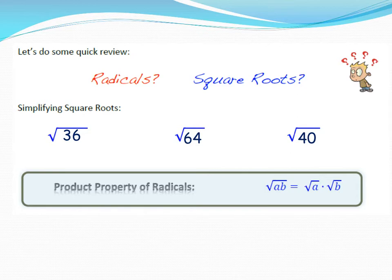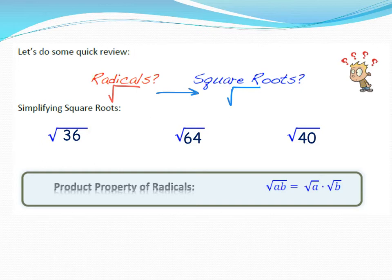I was using the word 'radical' and 'square root' interchangeably, so let's do a quick review. What is a radical? What is a square root? A radical is simply a symbol — kind of like an exponent. We've seen the radical symbol used for division, but we primarily use it for something called a square root. So radical and root mean the same thing.